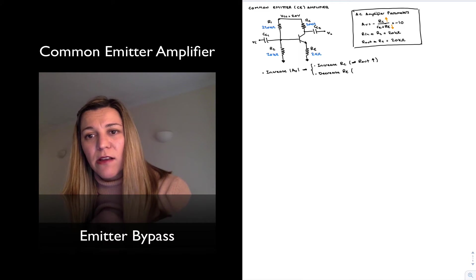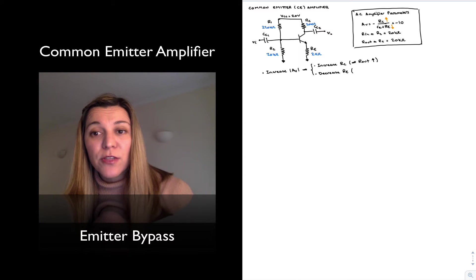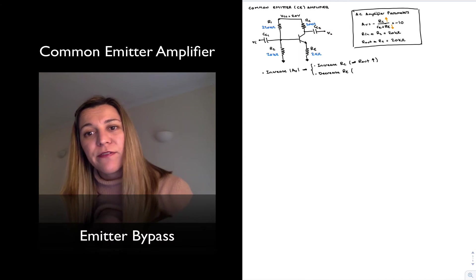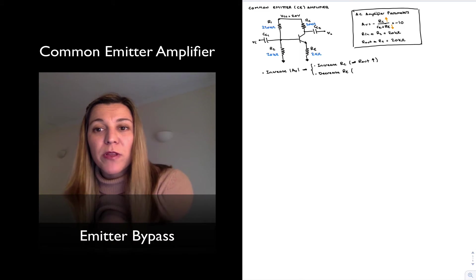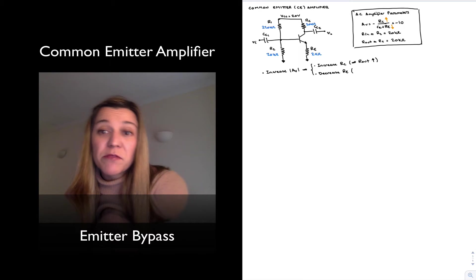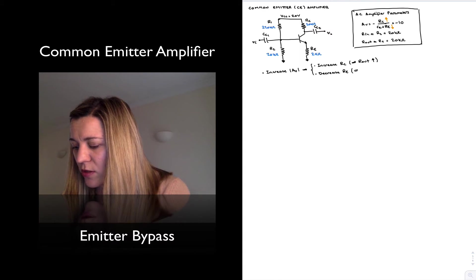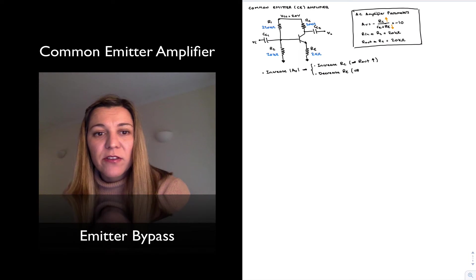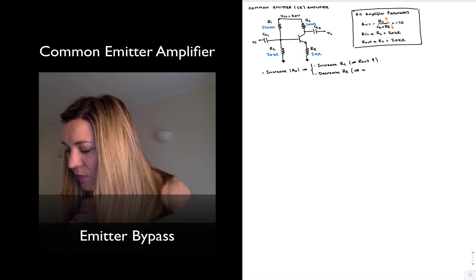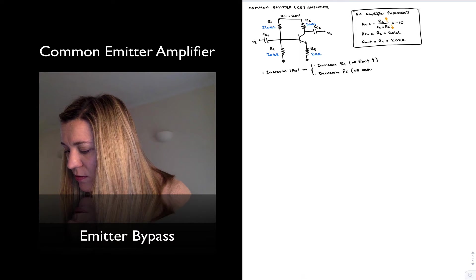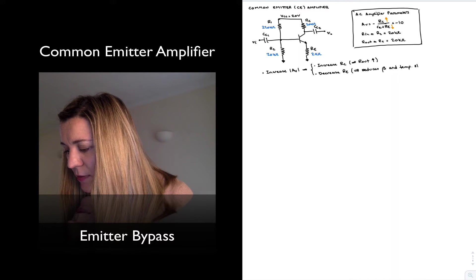Little RE is temperature dependent, but if RE is much larger than little RE, then we can assume that the gain is not as dependent on temperature or nearly independent of temperature. And so decreasing RE will affect both the beta and the temperature stability for the circuit, so reduces beta and temperature stability.